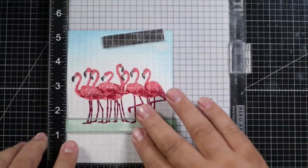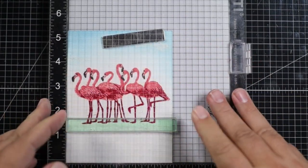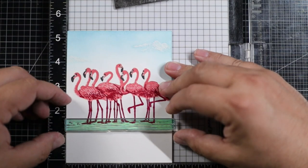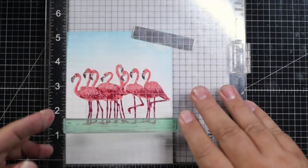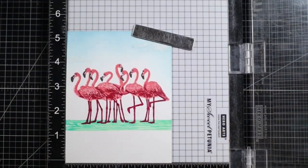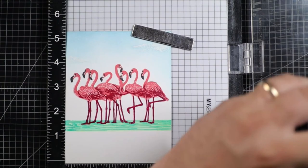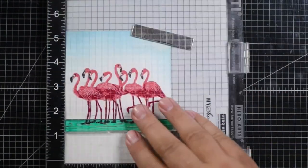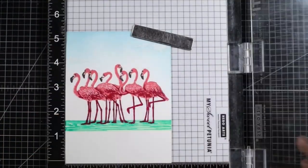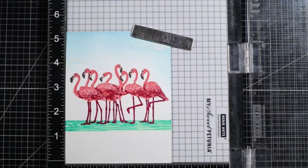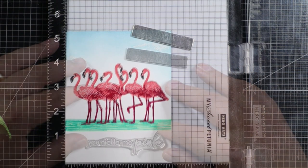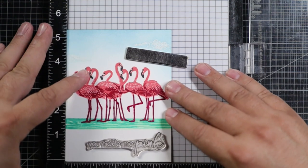For the base layer here of the water I'm gonna add some arctic ink and then I'm going to add some paradise ink on top of that and then stamp down the sentiment here at the bottom with some intense black ink that says you tickle me pink. What a great little sentiment.